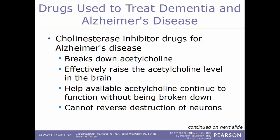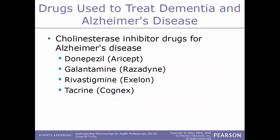One category of drugs used to treat Alzheimer's are cholinesterase inhibitor drugs. The enzyme cholinesterase breaks down acetylcholine, so cholinesterase inhibitors effectively raise acetylcholine levels and help available acetylcholine continue to function without being broken down. Importantly, this cannot reverse neurons already destroyed. Examples include donepezil (Aricept), galantamine (Razadyne), rivastigmine (Exelon), and tacrine (Cognex).